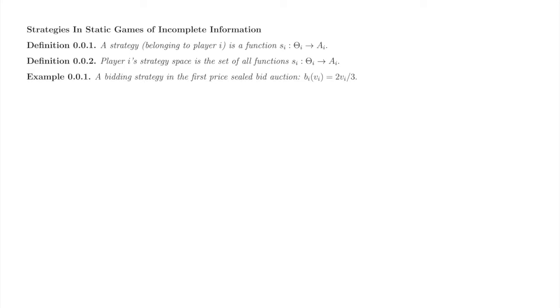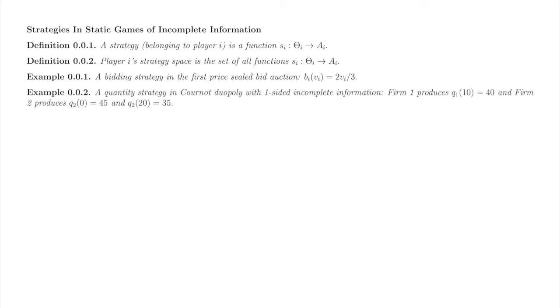A strategy in the first-price sealed bid auction is not an individual bid, but rather a bidding function. In Cournot duopoly with one-sided incomplete information, Firm 1 chooses a single quantity. Firm 1 cannot condition Q1 on Firm 2's cost because Firm 1 does not observe C2. Firm 2 chooses a quantity to play if C2 equals 0, and another if C2 equals 20.